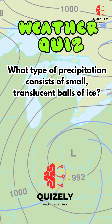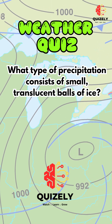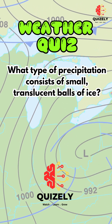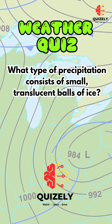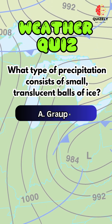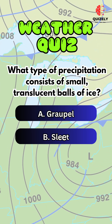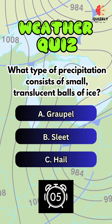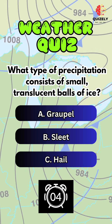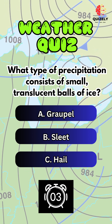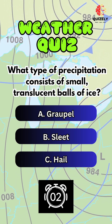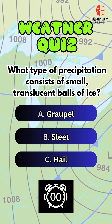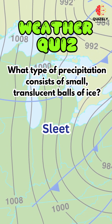What type of precipitation consists of small, translucent balls of ice? A. Graupel. B. Sleet. C. Hail. Sleet is the correct answer.